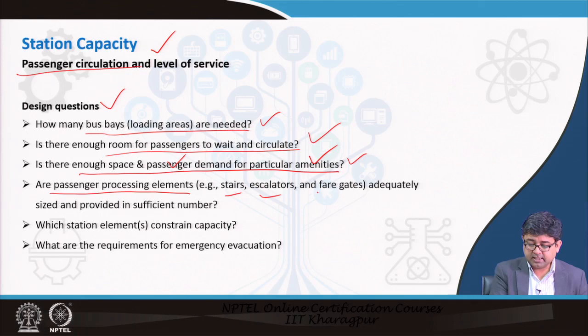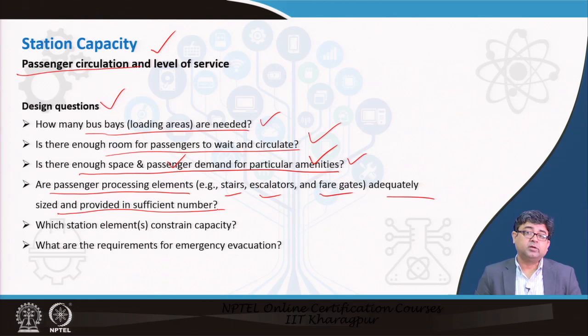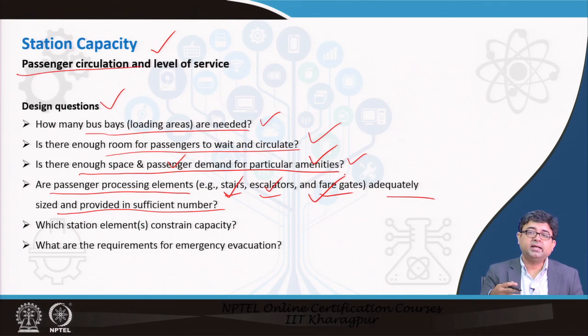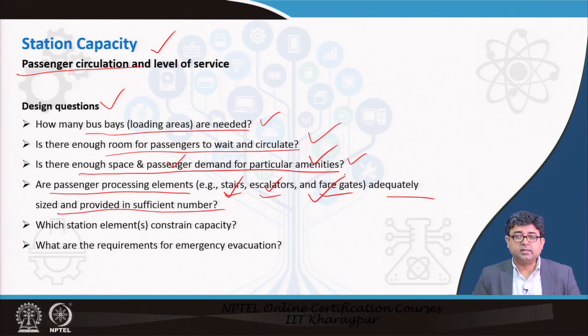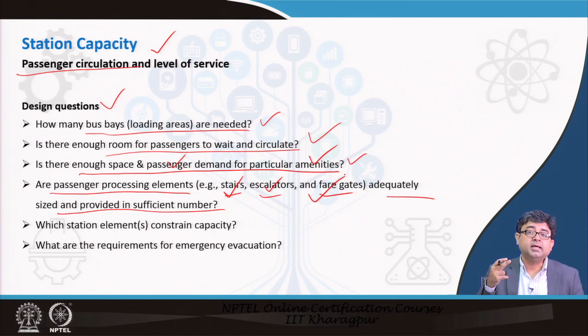Are passenger processing elements — such as stairs, escalators, and fare gates — adequately sized and provided in sufficient number? When talking about a transit station, are there enough escalators? Should there be escalators or only stairs? Are there enough fare gates so that during peak time people can punch their tickets without causing bottlenecks? Through these questions, you gain an understanding of the station elements and their capacities.